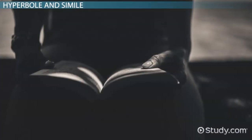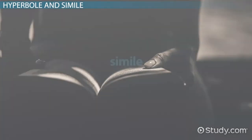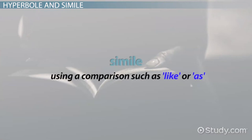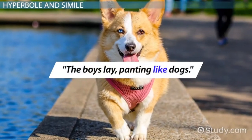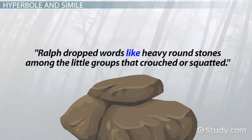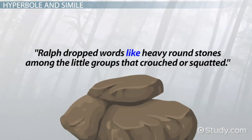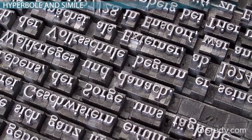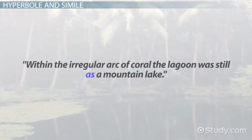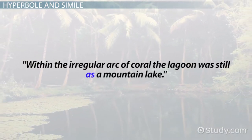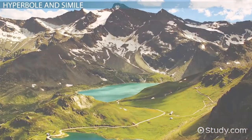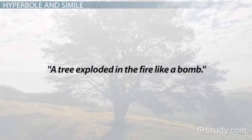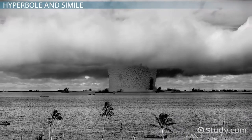Another literary device often used in Lord of the Flies is a simile. A simile, or figurative language, is using a comparison such as like or as. Let's look at a few examples. "The boys lay, panting like dogs" — here we are comparing the boys to dogs. "Ralph dropped words like heavy round stones among the little groups that crouched or squatted" — comparing Ralph's words to heavy stones. "Within the irregular arc of coral, the lagoon was still as a mountain lake" — comparing the lagoon to a mountain lake. "A tree exploded in the fire like a bomb" — comparing the explosion to a bomb.